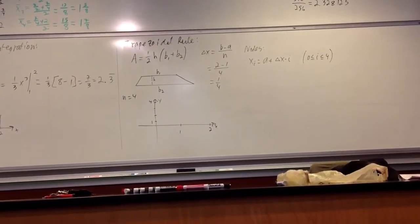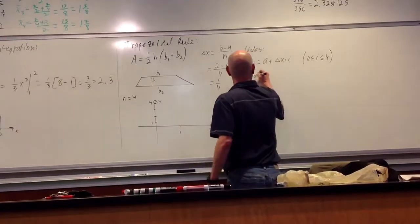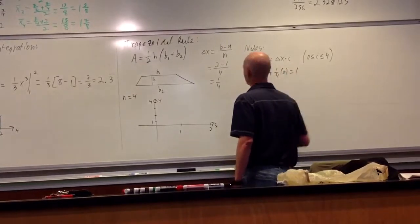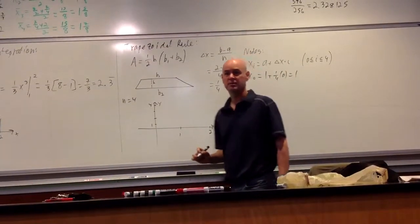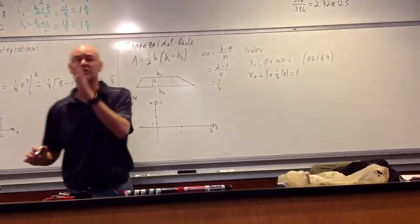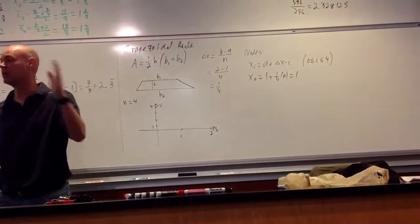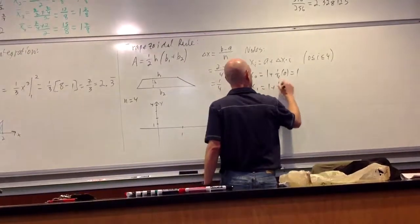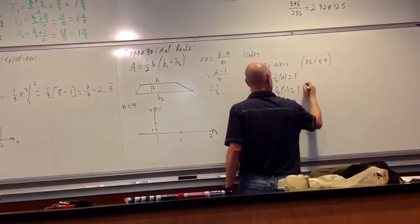So let's figure this out. X not, meaning when i equals zero, I'm going to get one plus one fourth times zero, which is going to get one. Notice I'm adding a delta x to each one, an extra one as we go through. X of one is one plus one fourth times one, which is one fourth.